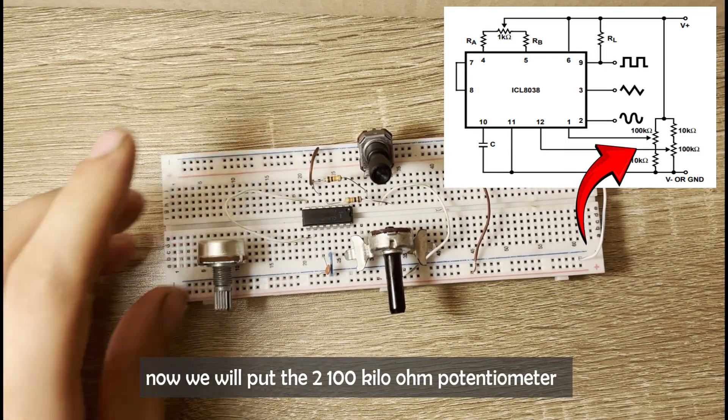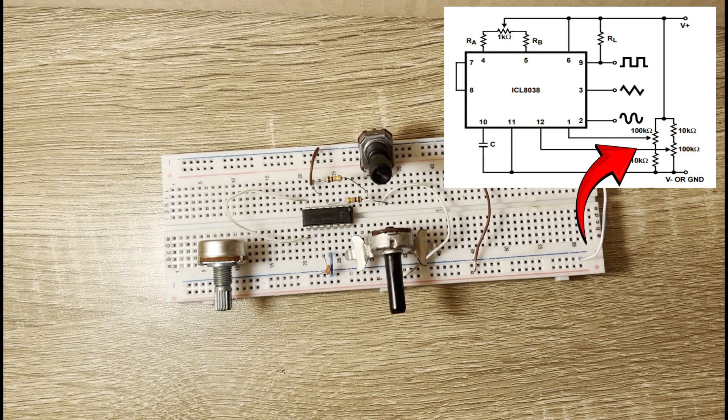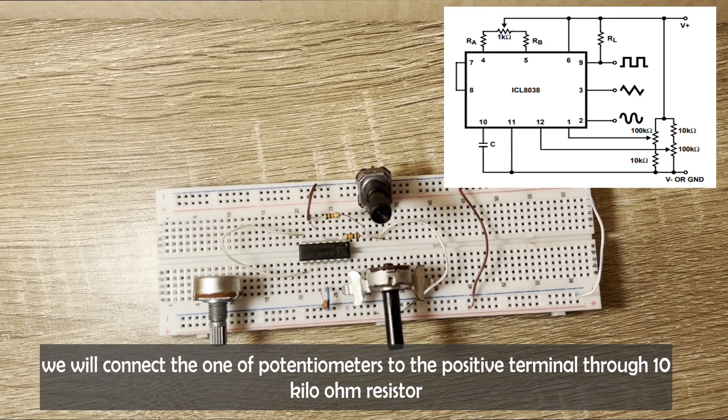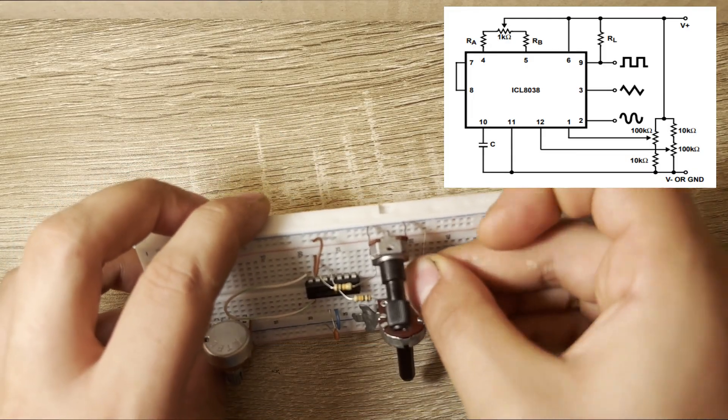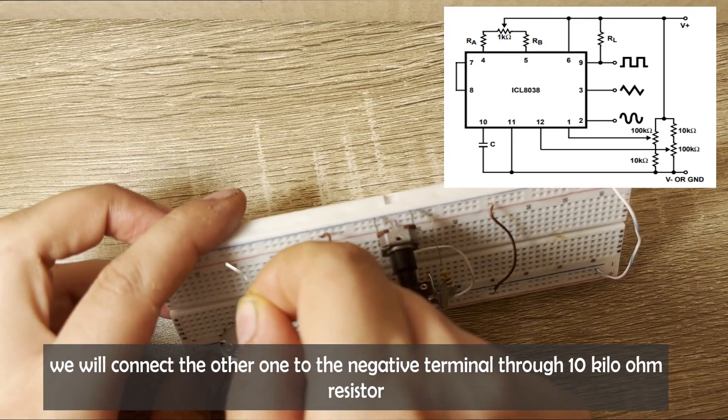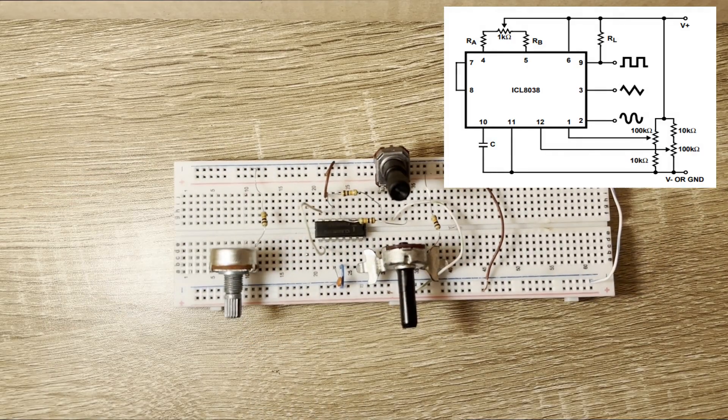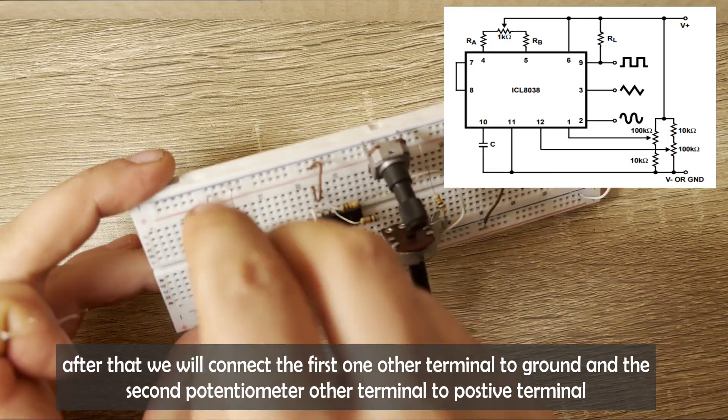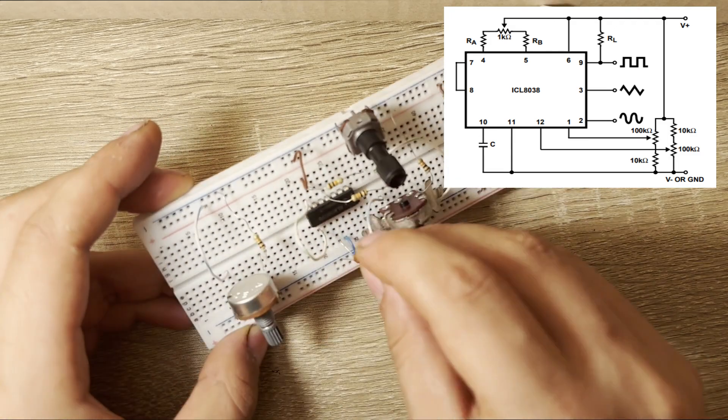Now we will put the two 100 kOhm potentiometers. We will connect one of the potentiometers to the positive terminal through a 10 kOhm resistor. We will connect the other one to the negative terminal through a 10 kOhm resistor. After that, we will connect the first one's other terminal to ground and the second potentiometer's other terminal to the positive terminal.